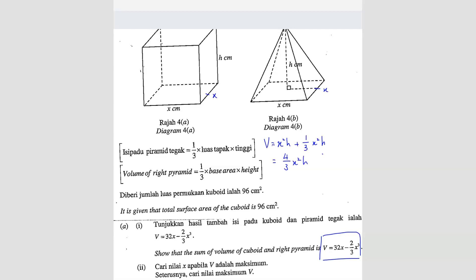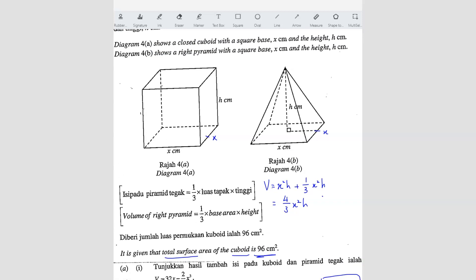Now what are we going to substitute in the h? Since they gave you this, they told you that total surface area of the cuboid is 96, so we have to find the h from there. We form a new equation. Total surface area, how do we find the surface area? This is square base, so here will be x². And the top here the same as well, so that means you got 2x².